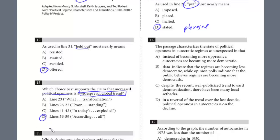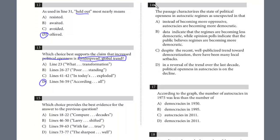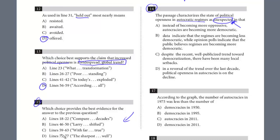We'll do the last two on this page: 14 and 15. This is a two-part question — always scan down to the second question. You see the evidence. We're looking for evidence to answer how the passage characterized the state of political openness in autocratic regimes as unexpected. We're looking for some type of evidence of openness in autocracies as being unexpected. That will help you get the evidence, and we're going to find the evidence first.